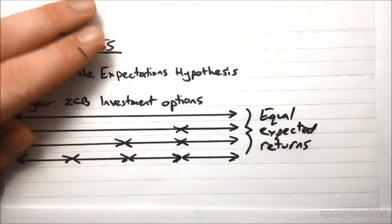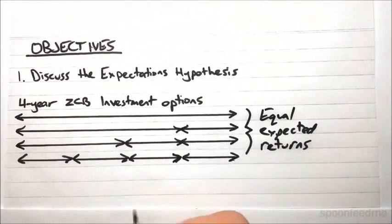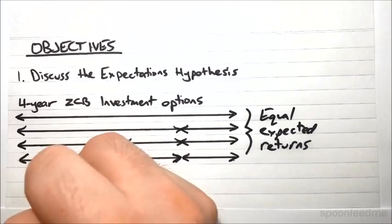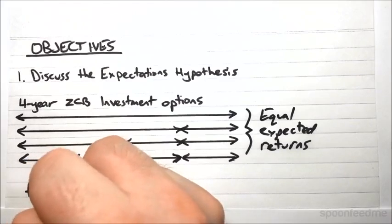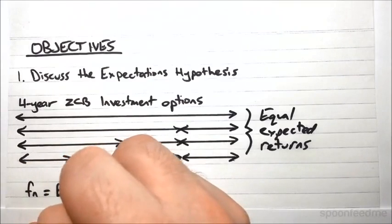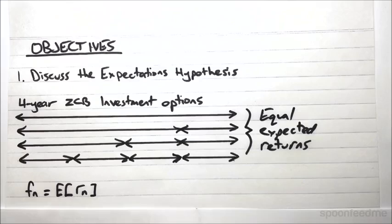So this can be easily summed up with the following: the forward rate is equal to the expectation by the market of the future short rate. And short rate is just a one-year interest rate. Specifically, this Rn is the rate for the one-year period ending n years from now.